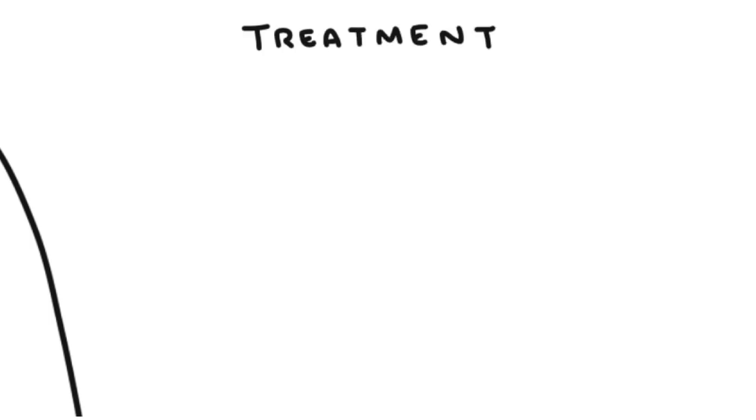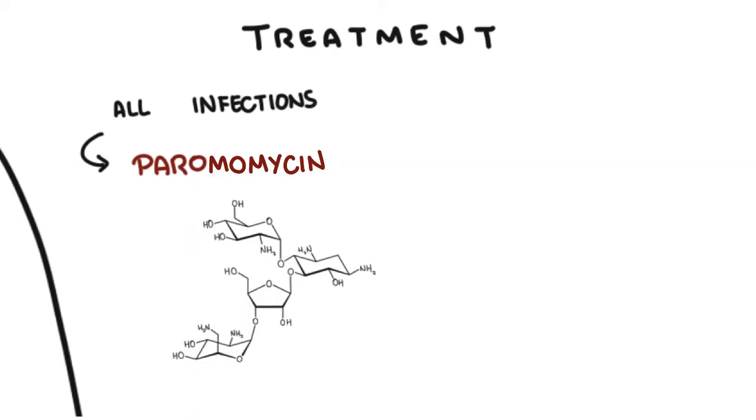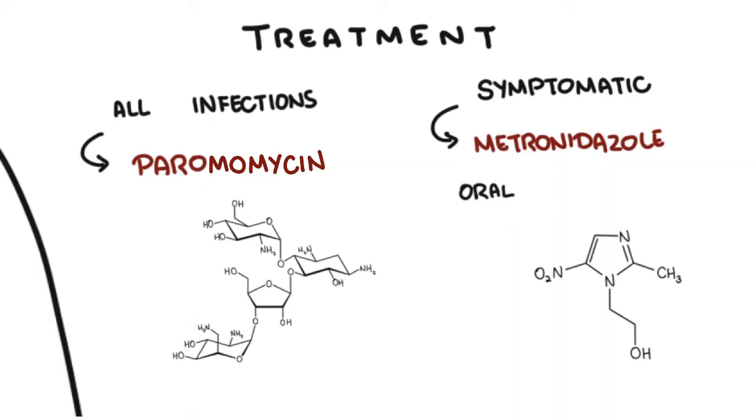Treatment of amoebiasis: For all infections, whether asymptomatic or symptomatic, paromomycin is used to eliminate the cysts. For symptomatic infections, such as intestinal or extra-intestinal amoebiasis, metronidazole is used, either oral for mild infection or intravenous metronidazole for more severe infection.